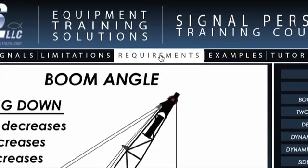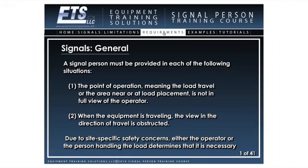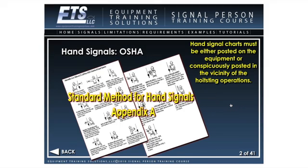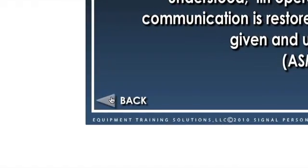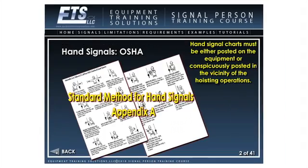The Requirements section. By left-clicking on the Requirements button, you will be directed to the Requirements section of our program. This section will demonstrate all of the requirements that a signal person must comply with in accordance with OSHA and ASME. This section consists of 41 pages. Once you have read and understand the information given on the page, you may advance to the next page by simply left-clicking anywhere on the page. If for any reason you wish to return to a previous page, you may do so by left-clicking on the back arrow at the bottom left-hand corner of the page. Once you have read and understand all 41 pages of the signal person requirements, you may move on to another section of the program by selecting another button from the menu bar.